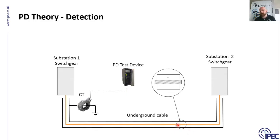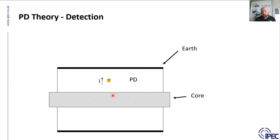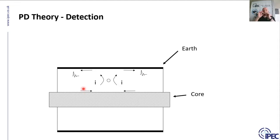Zooming into the cable: we have a single-core high voltage cable with an earth shield around the outside. When a PD occurs during the rising edge of the power cycle, it is induced on the inside of the earth sheath and also an equal and opposite signal on the outside of the core. Because those two signals are equal and opposite, if you put a sensor around the full cable you won't detect anything.